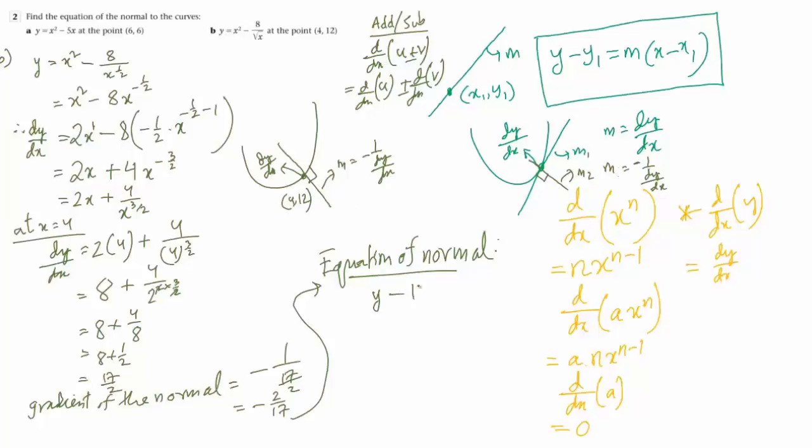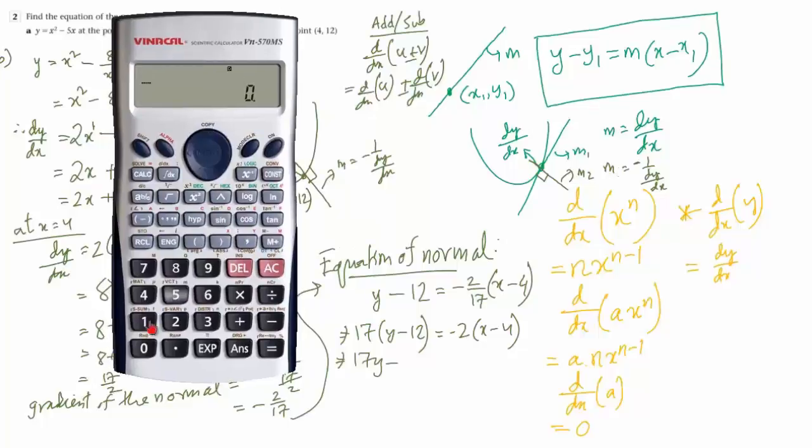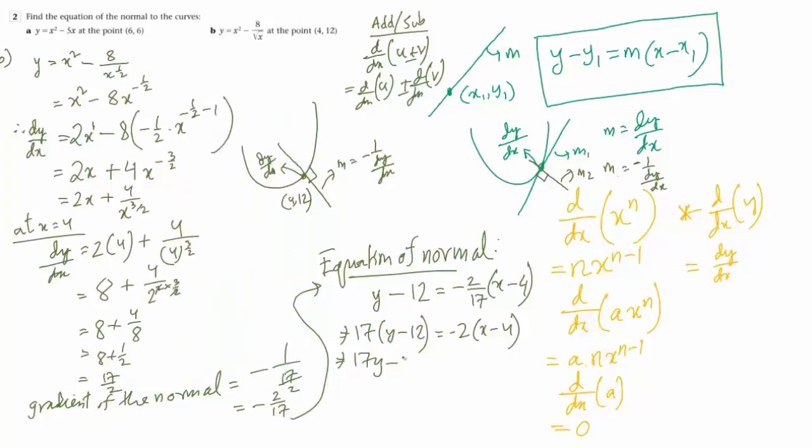So y minus 12 equals m, which is minus 2 by 17, times x minus x1, which is 4. Let's simplify this. Multiply the left hand side with 17. So 17 into y minus 12 equals minus 2 into x minus 4. So we have 17y minus 17 into 12, which is 204, equals minus 2x plus 8.